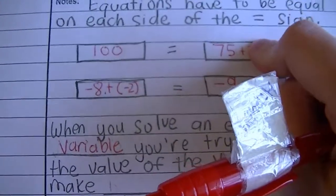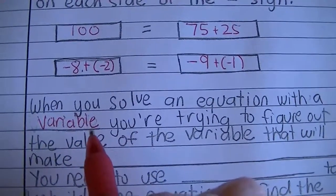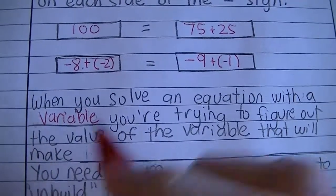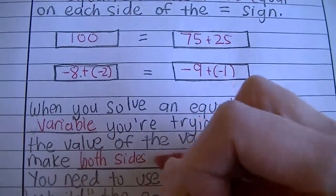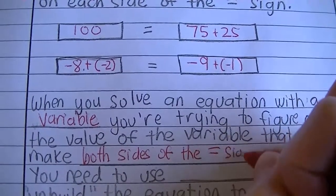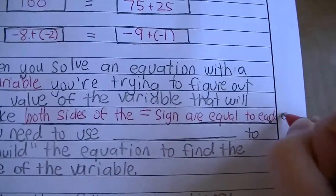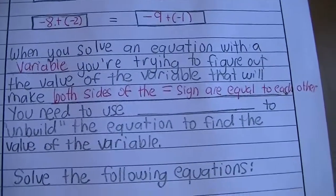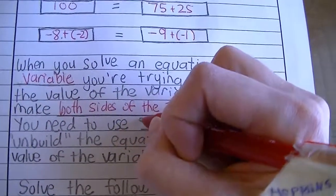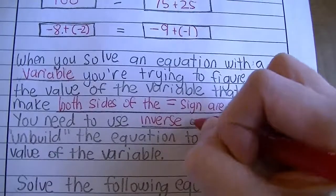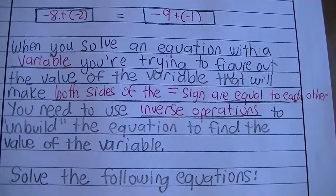Sometimes it's not as straightforward as that, so I'm going to show you a way to figure out how to solve equations. You've got to figure out what that variable is so that both sides of the equal sign are equal to each other. To help you do that when there's a variable in an equation, you will need to use inverse operations. Inverse operations will help you un-build the equation to find the value of that variable.